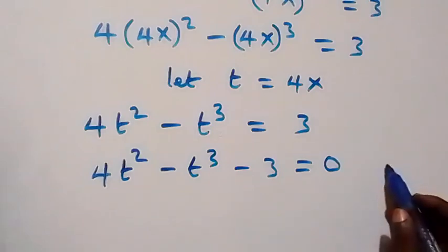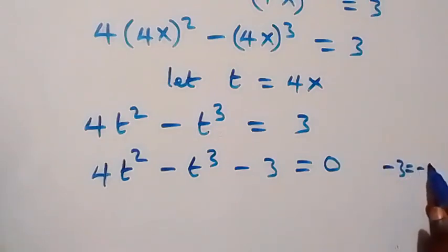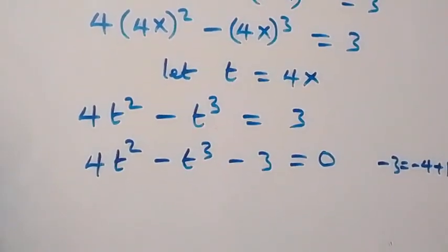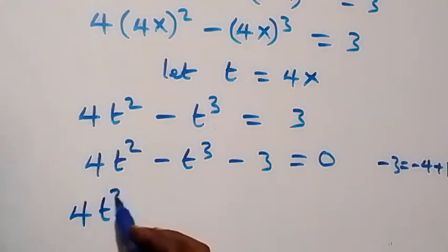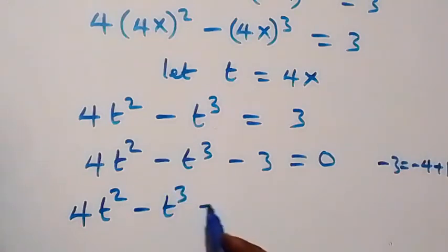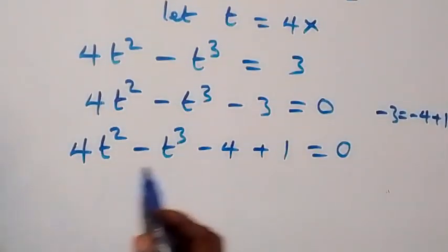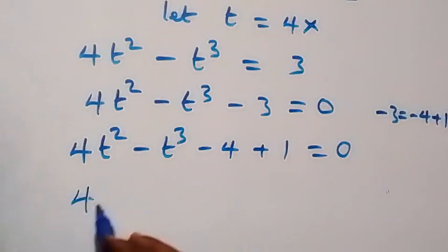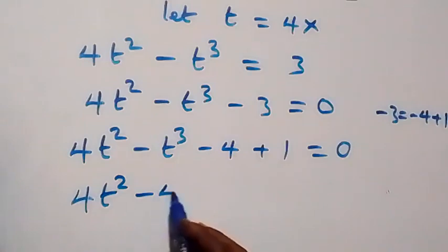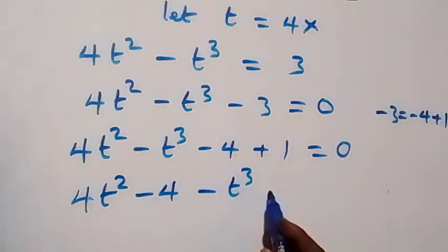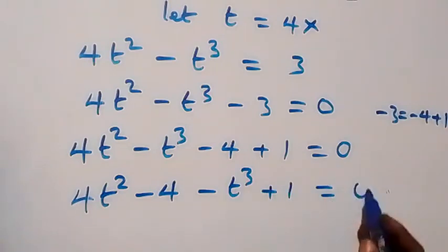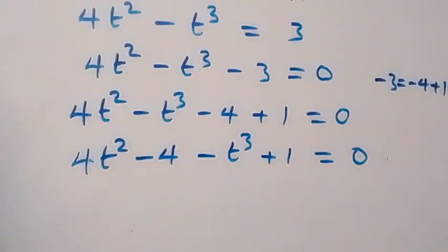Now, minus 3 is the same as minus 4 plus 1. Substituting that, this becomes 4t squared minus t cubed minus 4 plus 1 equals 0. Bringing minus 4 together with 4t squared, we have 4t squared minus 4, then minus t cubed plus 1, equals 0.